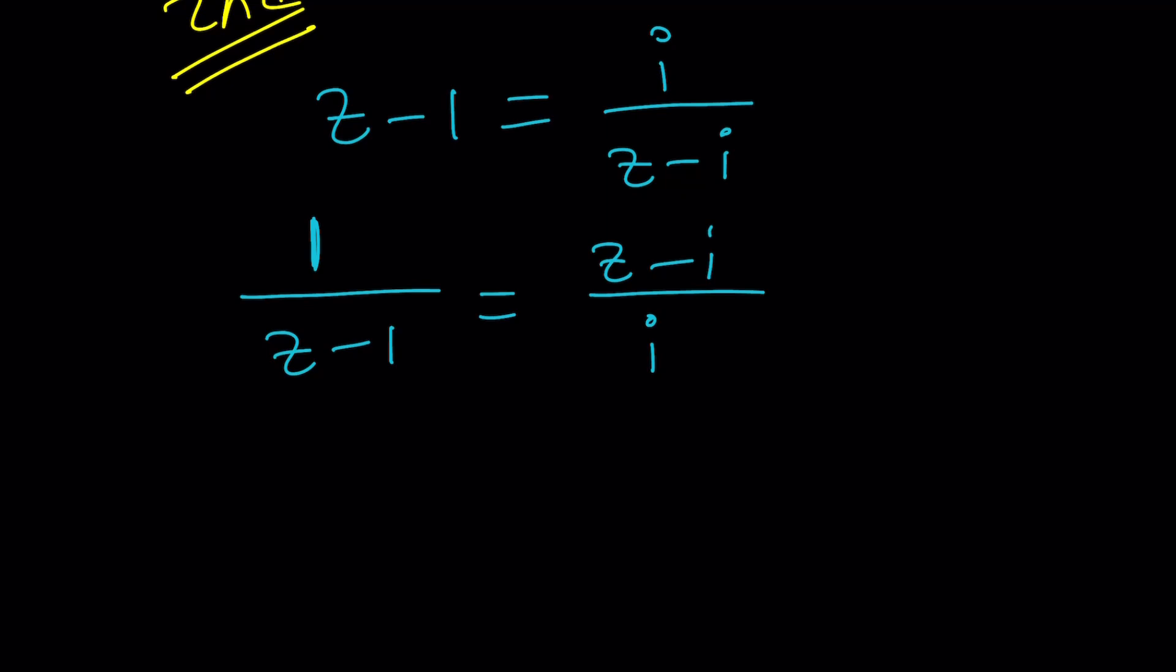I have i over z minus i, which cannot be separated because the denominator is a sum, right? Or a difference, whatever. But if I had the reciprocal, then it could be separated. So in other words, a over b minus c cannot be separated, but b minus c over a can. So that's what I did. Flip.